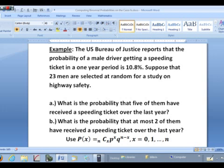The U.S. Bureau of Justice reports that the probability of a male driver getting a speeding ticket in a one-year period is 10.8%. Suppose that 23 men are selected at random for a study on highway safety.